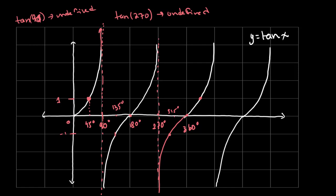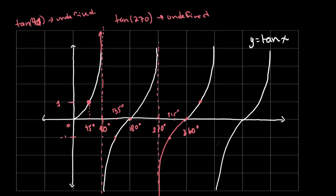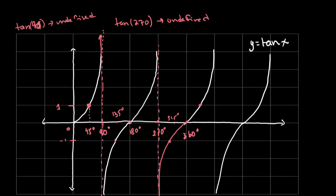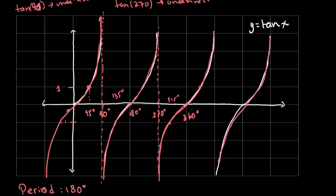What is the period of the graph of tan of x? Unlike sine and cosine where it was 360 degrees, the period of tan is 180 degrees. After every 180 degrees, the graph repeats the same pattern. So from one asymptote section to the next, each 180-degree interval contains the same curve.